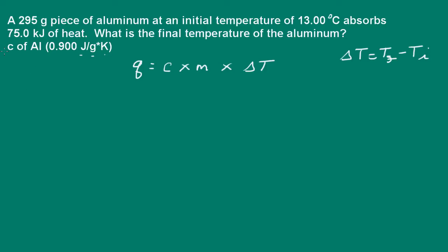Here they give us the specific heat capacity of aluminum, so we can go ahead and use this relationship. The heat represented by Q is equal to the specific heat capacity of the aluminum times the mass times the change in temperature. And remember, delta T is equal to the final temperature minus initial temperature.